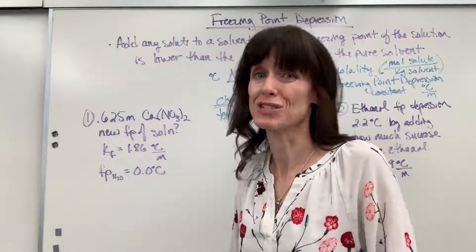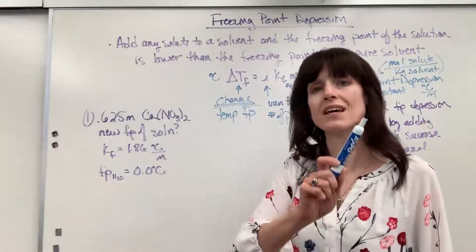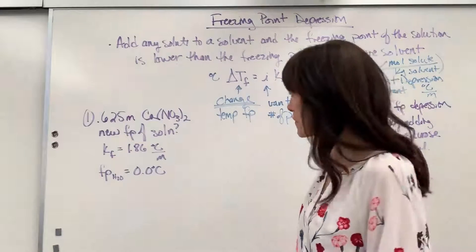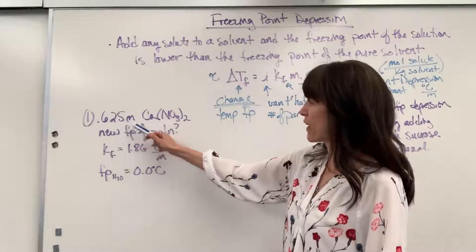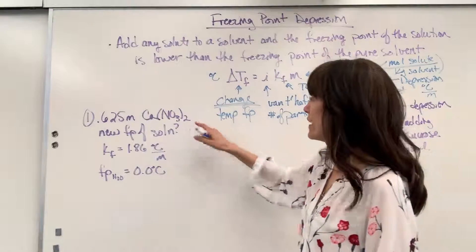And in some problems there's a chance you might have to do that. If they give you grams, be sure to use molar mass convert from grams to moles. And then just do mole of solute divided by kilogram of solvent. So we have this 0.625 molal solution. And we want to know what's the new freezing point.